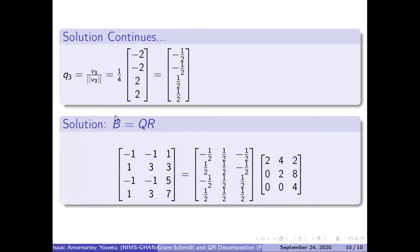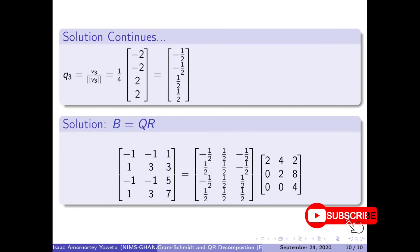In conclusion, we say our matrix B can be decomposed to Q and R, which is the solution we have obtained here. Our Q columns form an orthonormal basis, where the dot product of individual columns is orthogonal to each other. This is our right upper triangular matrix R, of which the diagonals are always non-zero. If this video happens to be of help to you, please like, share, comment, leave your comments below, and don't forget to subscribe to this channel. Thank you. God bless you.